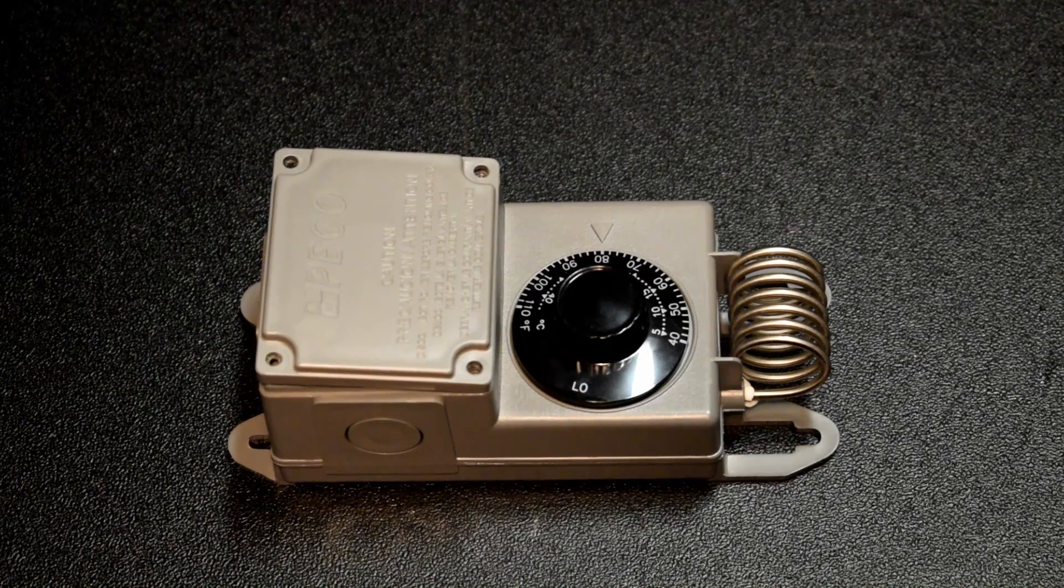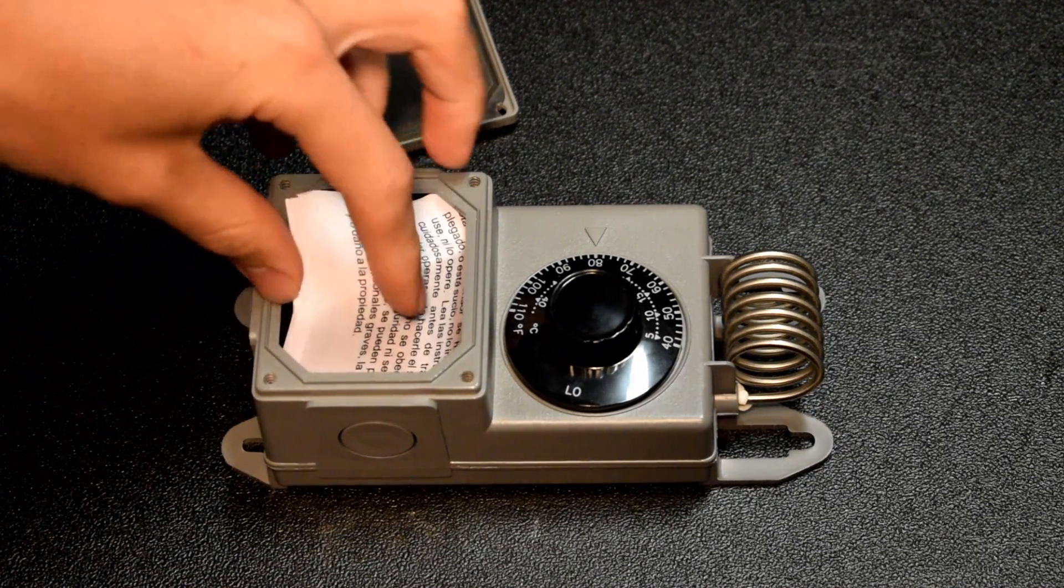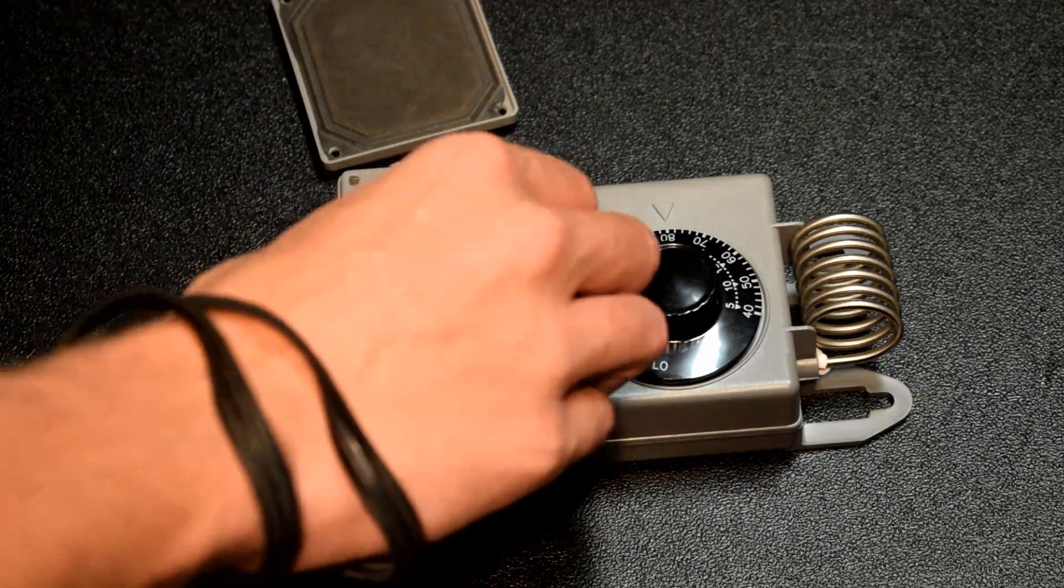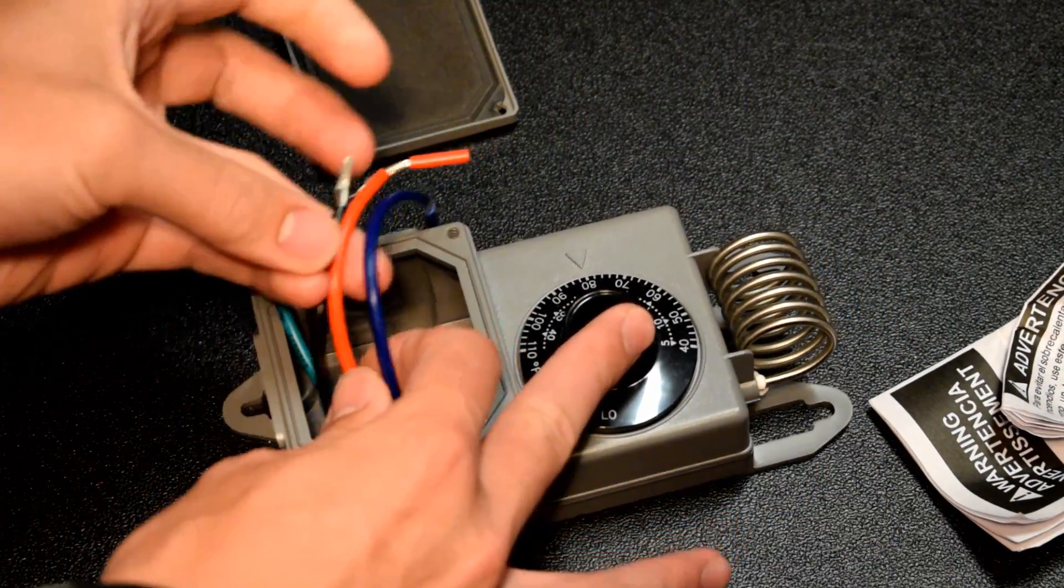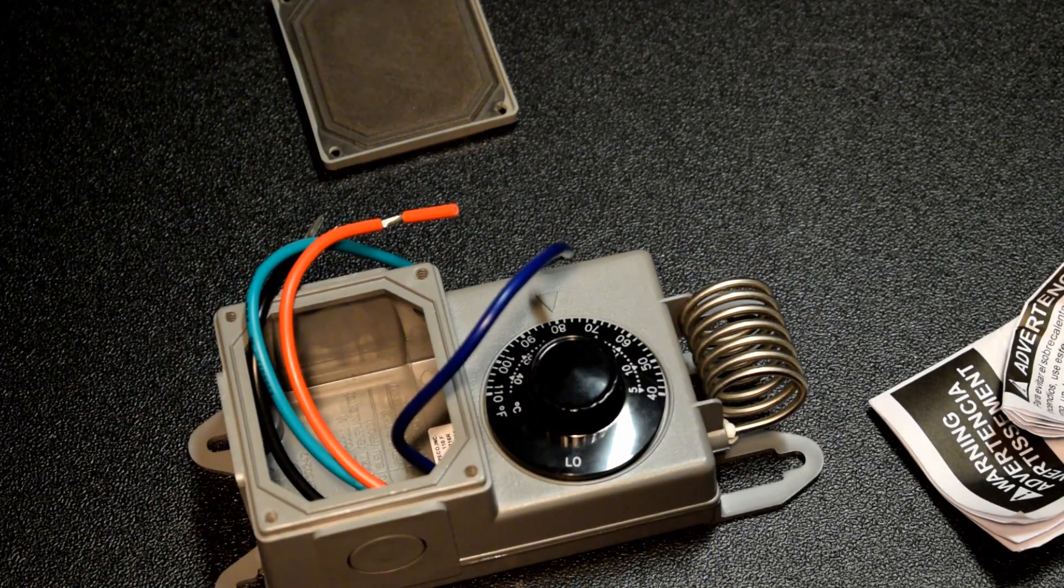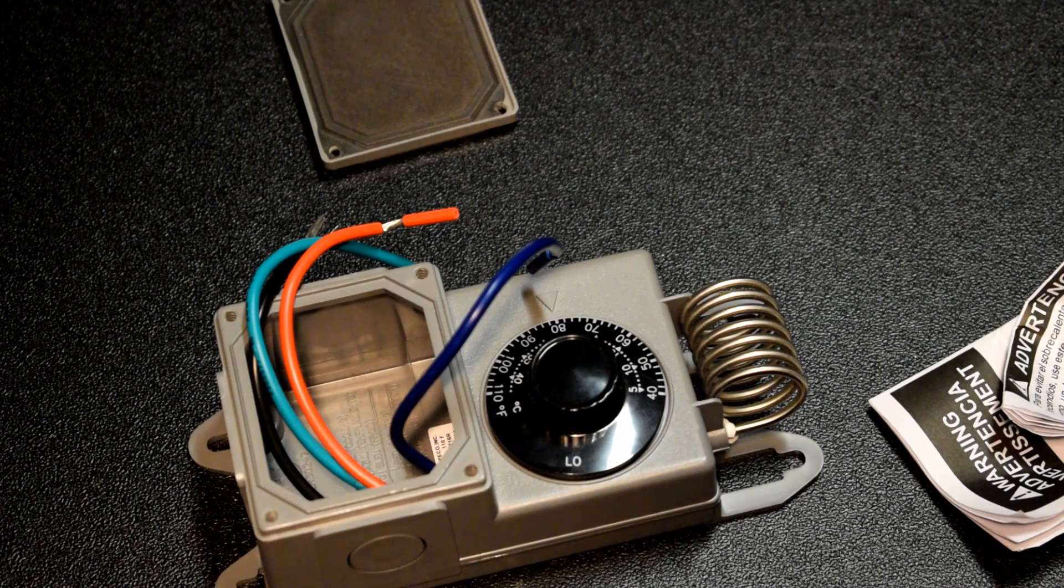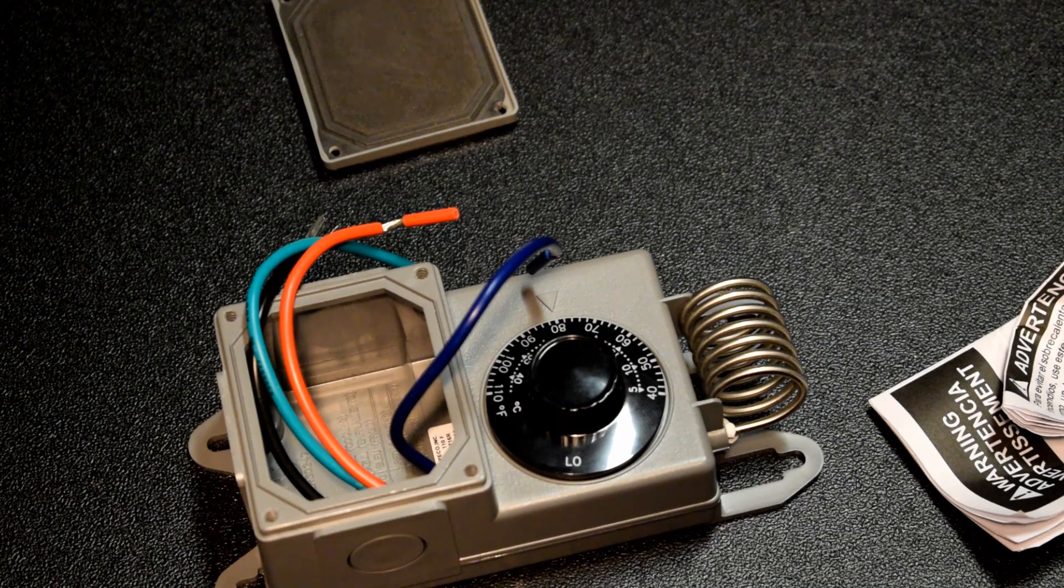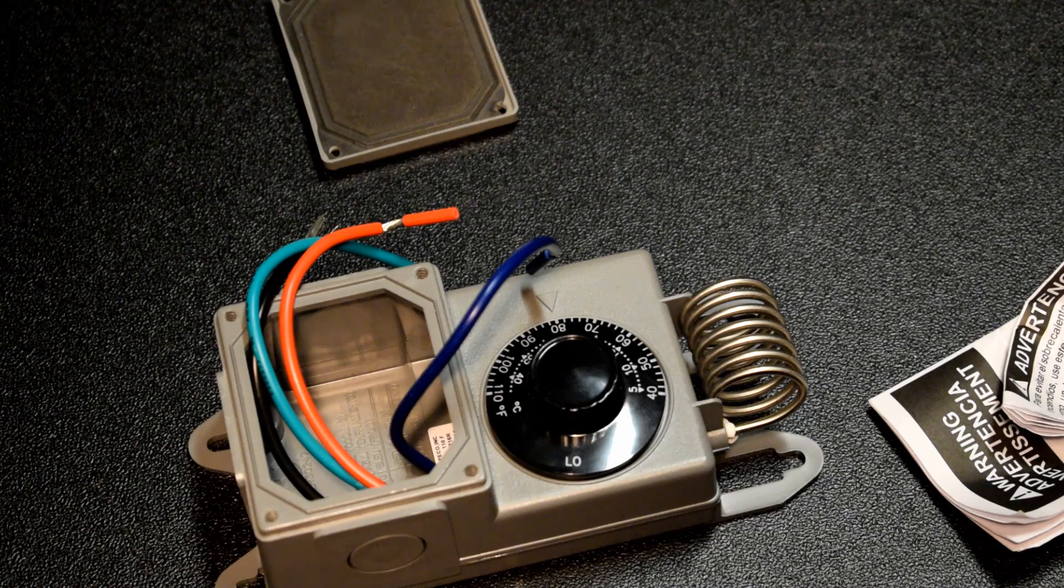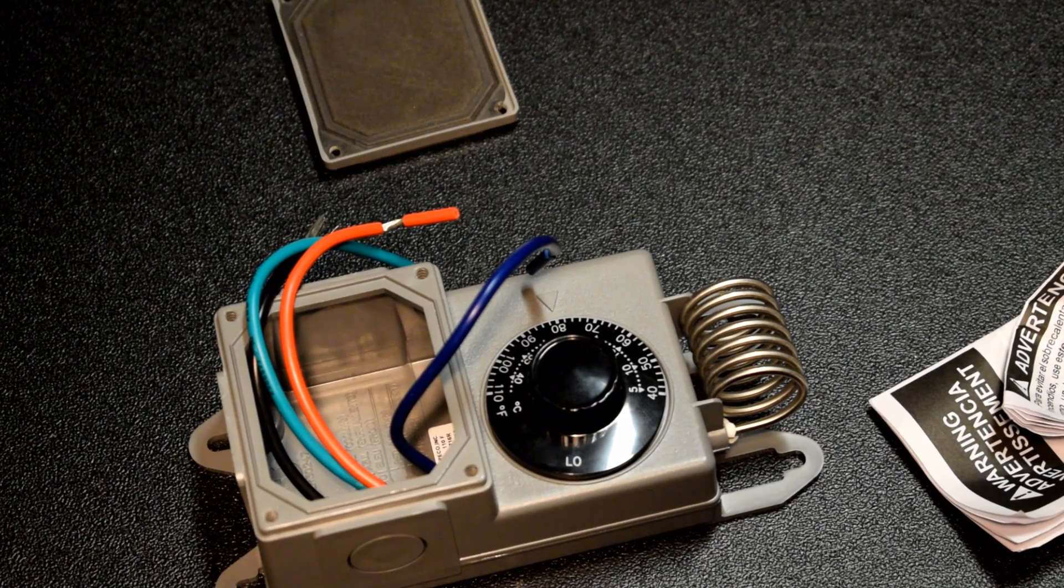So getting into how it works, power will go into the black wire and then it will come out either the blue or the red wire, depending on what demand is called for. If there's heating demand, it would power the red wire. If there's a cooling demand, power the blue wire.